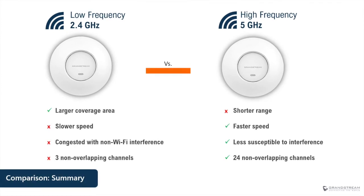This slide summarizes the characteristics of each band. The advantage of the low-frequency 2.4 gigahertz band is larger coverage range, but the downsides are slower speed, congestion from both non-Wi-Fi and Wi-Fi interference, and only three non-overlapping channels. On the other hand, the high-frequency 5 gigahertz band has a shorter range compared to 2.4 gigahertz, but offers faster speed, less susceptibility to interference, and more channels — up to 24 non-overlapping channels of 20 megahertz.